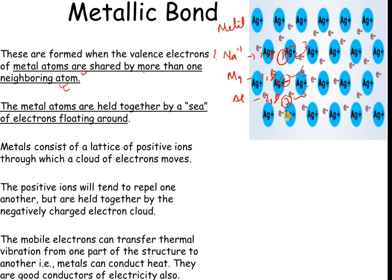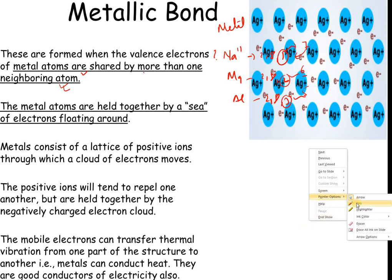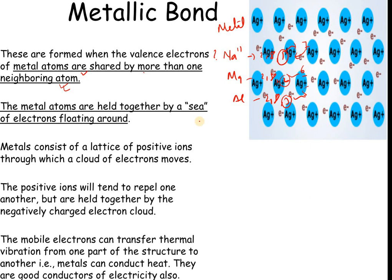Take silver as an example: silver, a metal, forms cations by losing valence electrons, but those electrons are not really gone — the same electron can be attracted to many surrounding metal ions. Metal atoms are held together by a sea of electrons floating around them, and this is called metallic bonding. If asked to define it: metallic bonding is the bonding that holds metal atoms together by attraction between a sea of electrons and the metal cations.